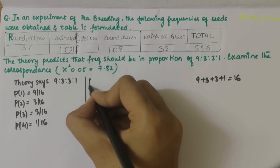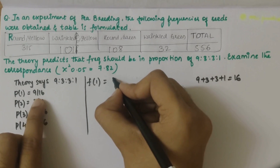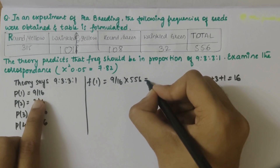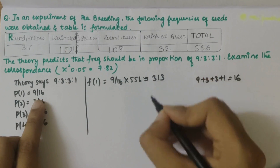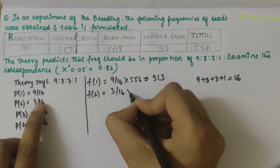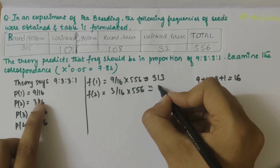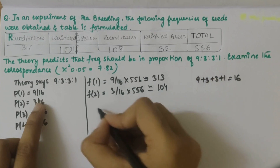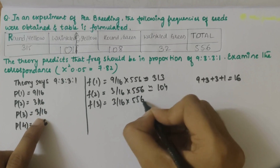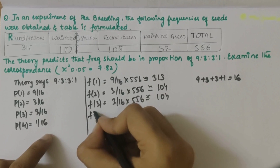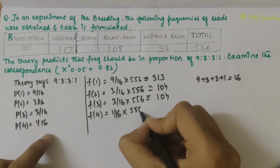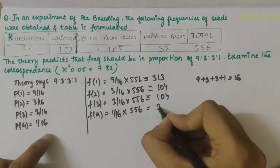The frequency of getting the first one would be 9/16 times the total 556, which rounding off gives 313. The frequency of getting the second one would be 3/16 times 556, giving 104. The frequency of the third is again 3/16 of 556, giving 104. And the fourth one is 1/16 times 556, which gives 35.